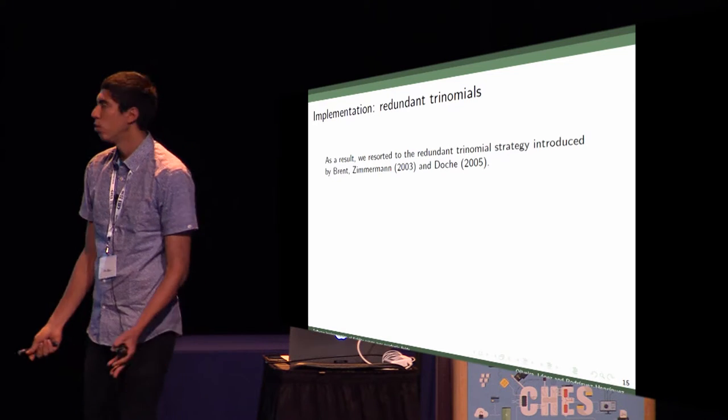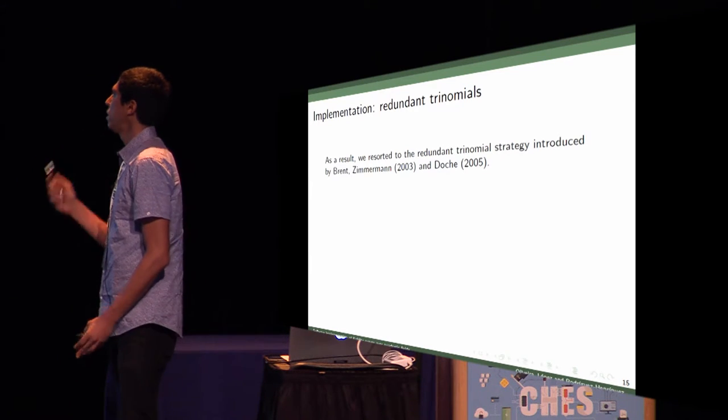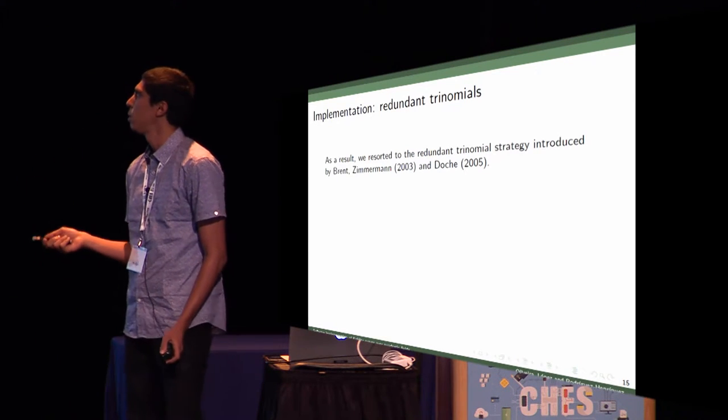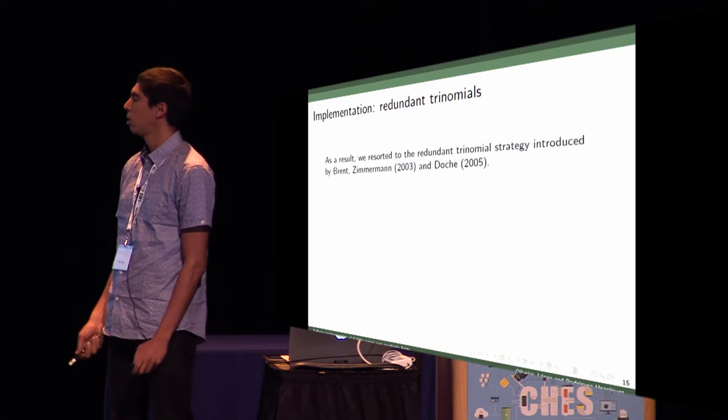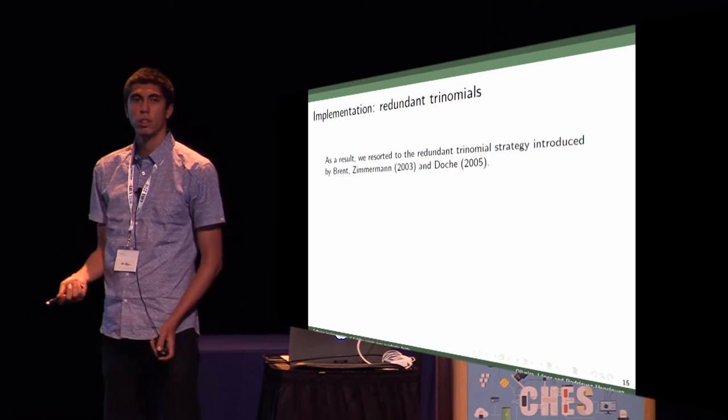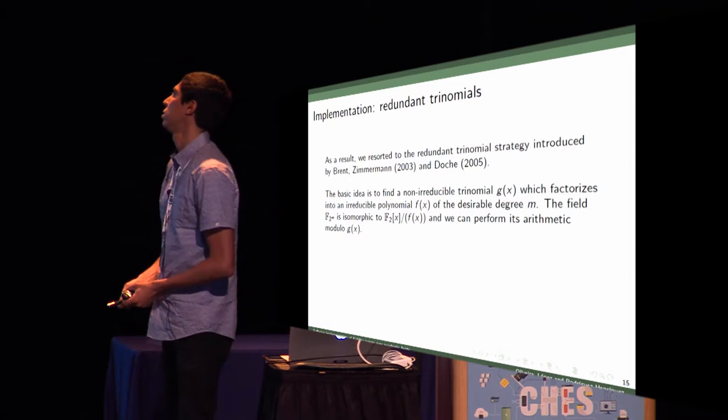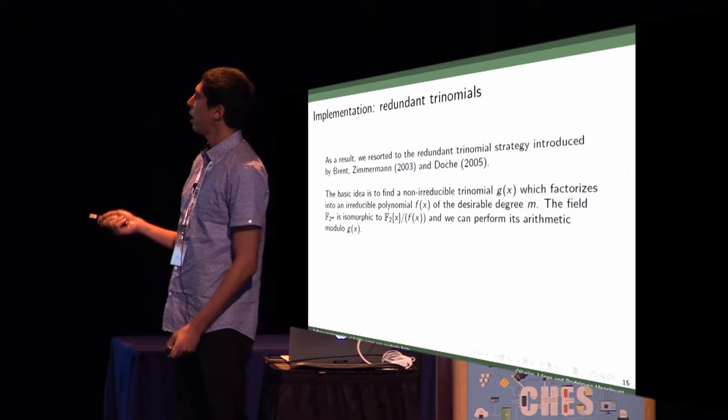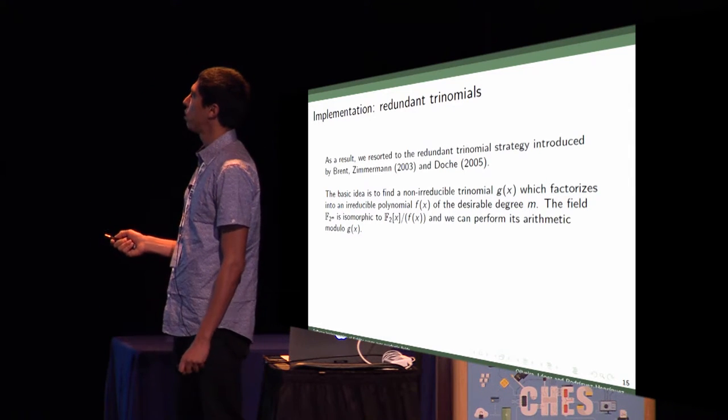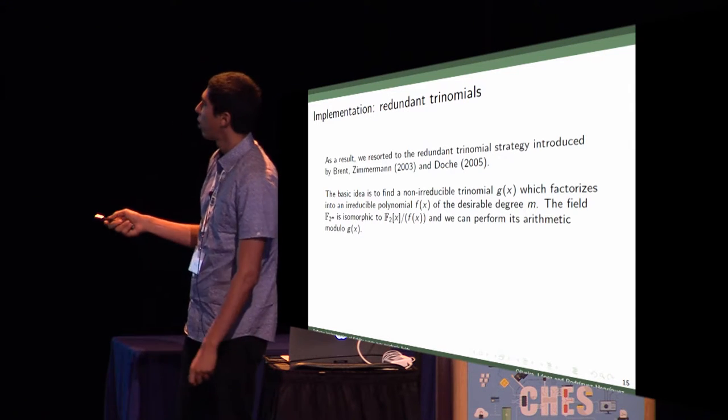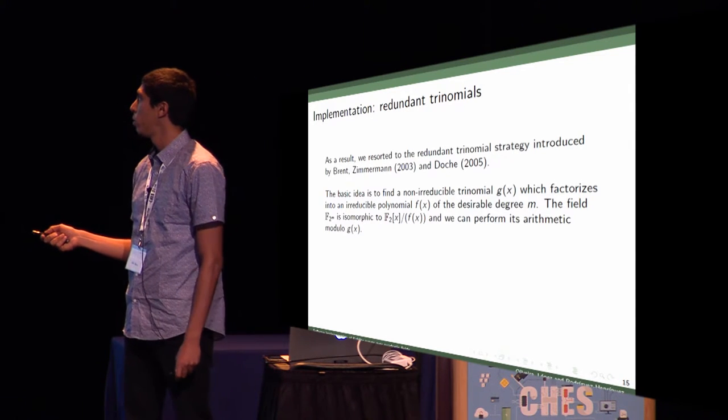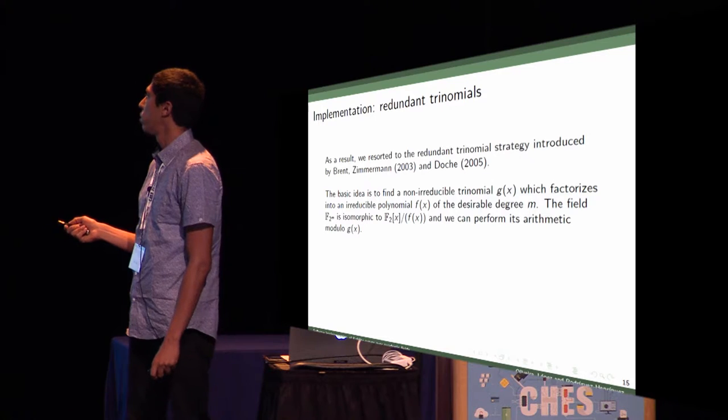For that reason, we chose this strategy introduced by Bernstein, Zimmermann, and Kohel in 2003 and 2005, which is called redundant trinomials. What's this idea? We have to find a non-reducible trinomial G(X), which factorizes into an irreducible polynomial F(X) of the desirable degree M.